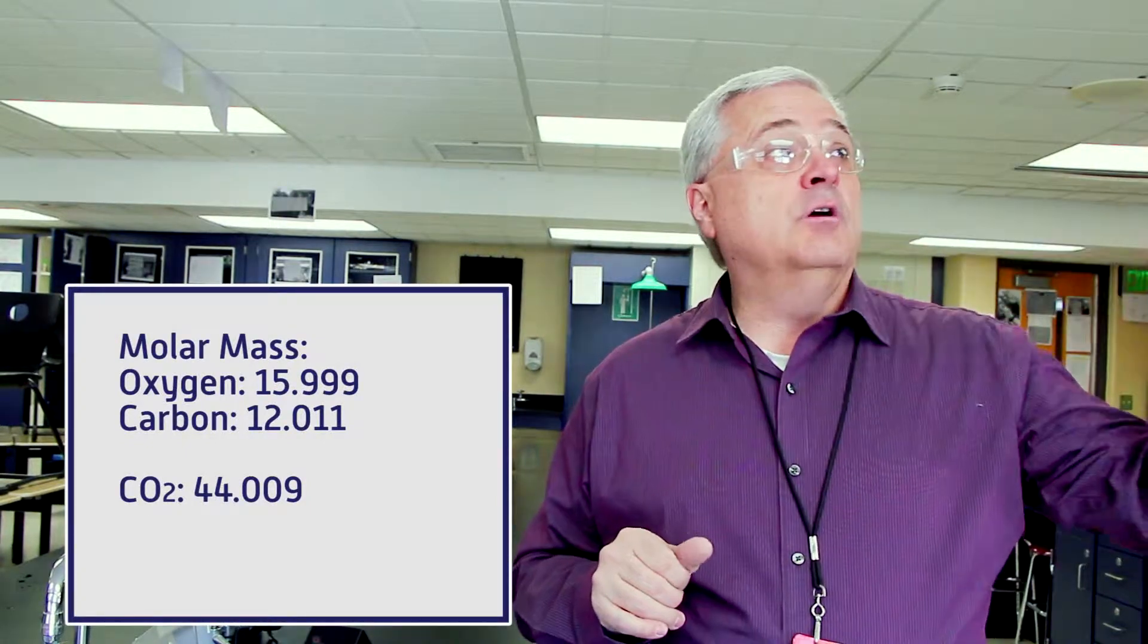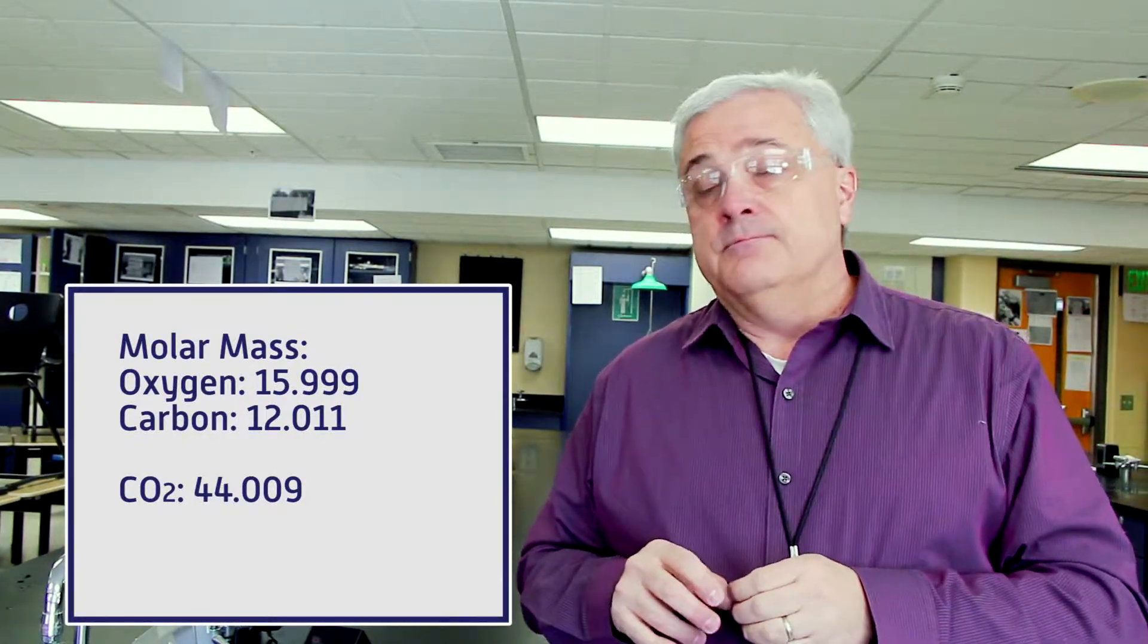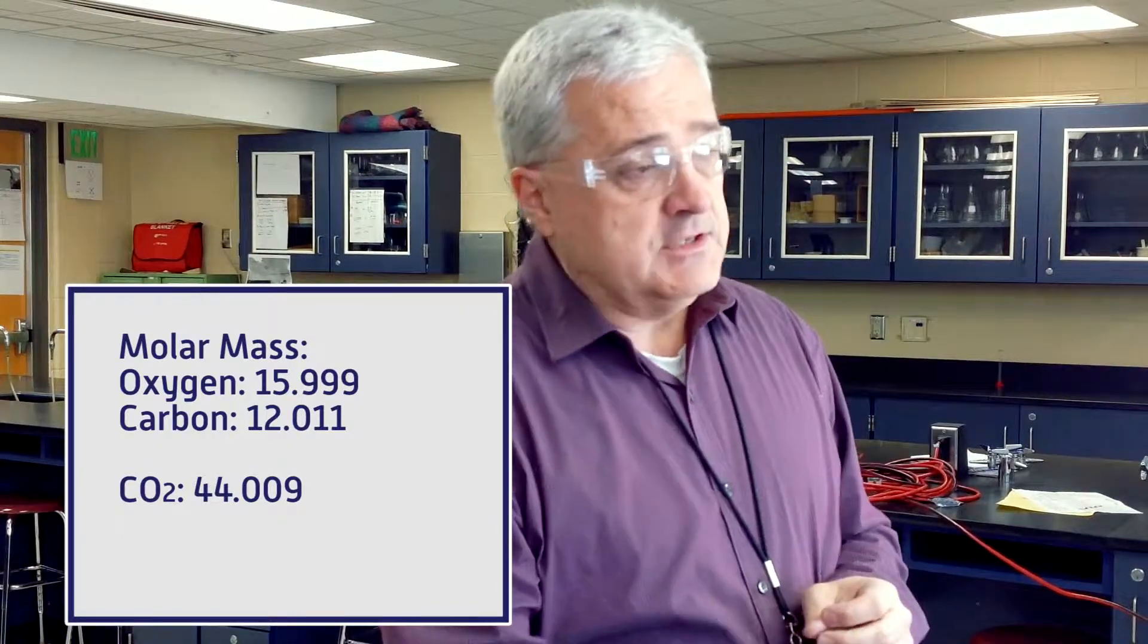To find the molar mass of carbon dioxide, we use the periodic table and find the atomic mass of the two elements and put it together. Using 15.99 for oxygen and 12.011 for carbon, we can come up with a molar mass of carbon dioxide of 44.009. That will be our molar mass that we're going to use in the calculations.